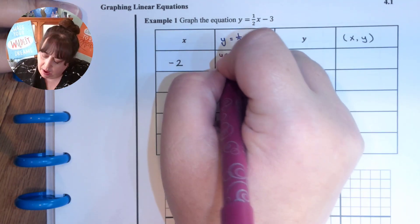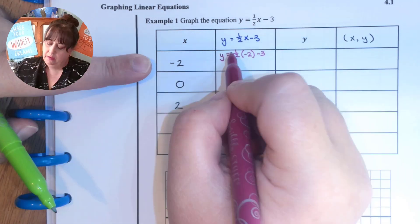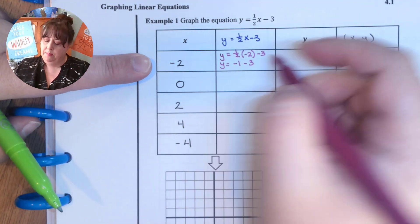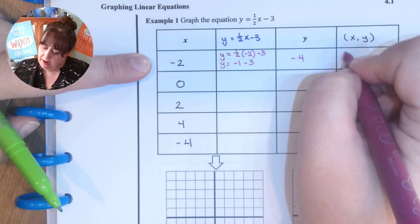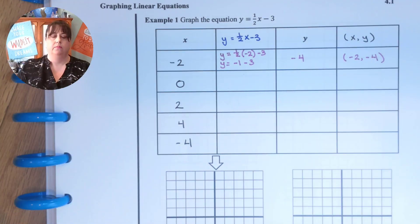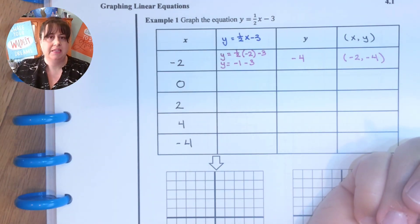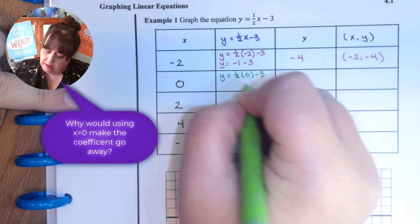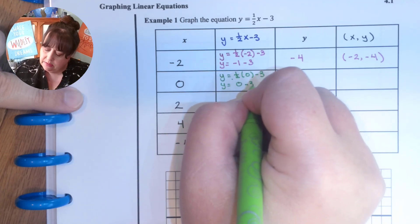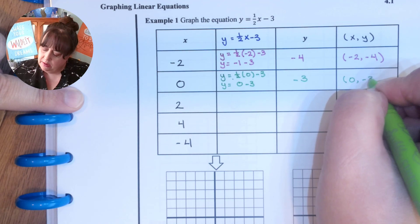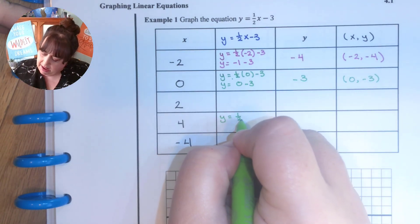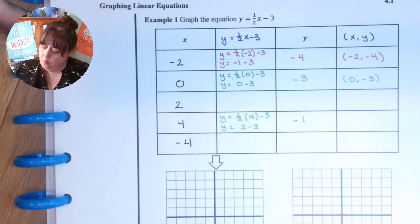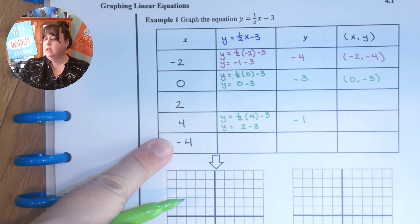So y equals one half times negative two minus three. One half of negative two is negative one, minus three gives negative four. So my ordered pair is negative two, negative four. Zero is always nice to use because that makes the coefficient go away — y equals one half times zero minus three, which is zero minus three, so the point is zero, negative three. For x equals four: y equals one half of four minus three — half of four is two, two minus three is negative one. Go finish x equals two and x equals negative four on your own.